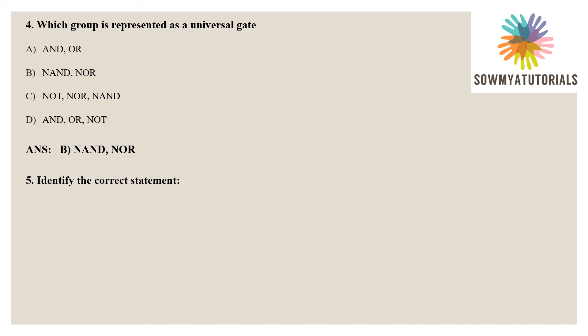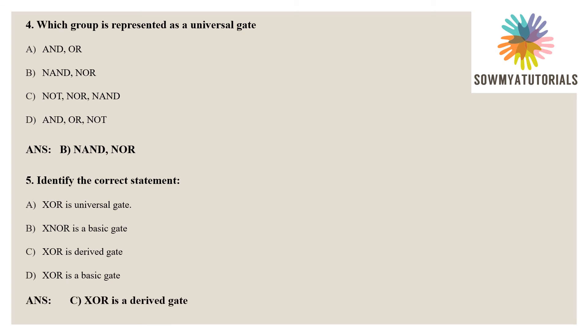Fifth question: identify the correct statement. Option A: exclusive OR is a universal gate — wrong. Option B: exclusive NOR is a basic gate — also wrong. Option C: exclusive OR is a derived gate — yes, this is true. Option D: exclusive OR is a basic gate — this is wrong. The correct option is option C: exclusive OR is a derived gate.